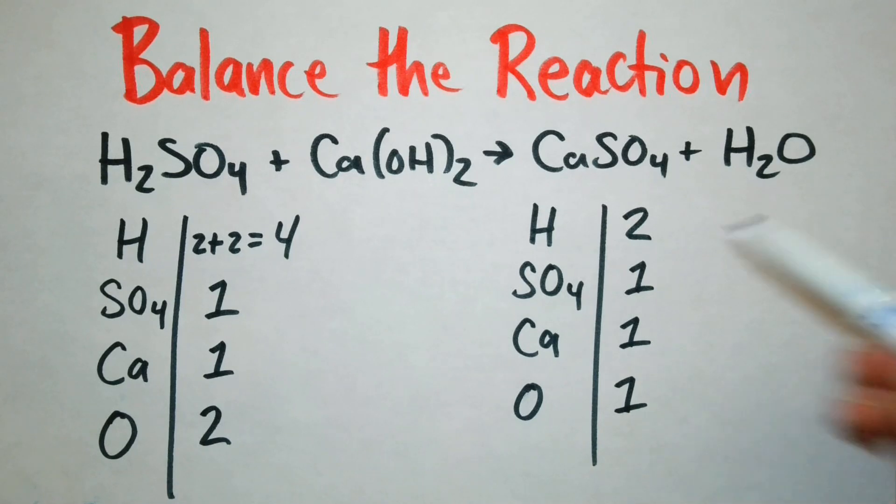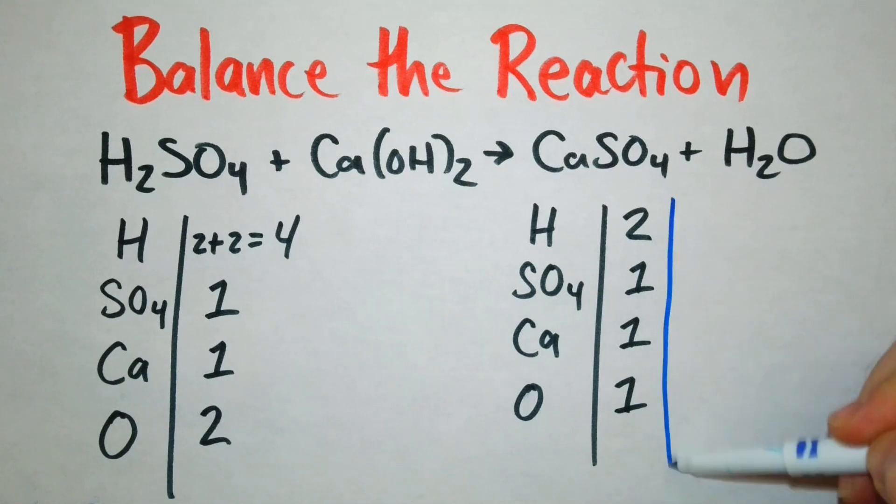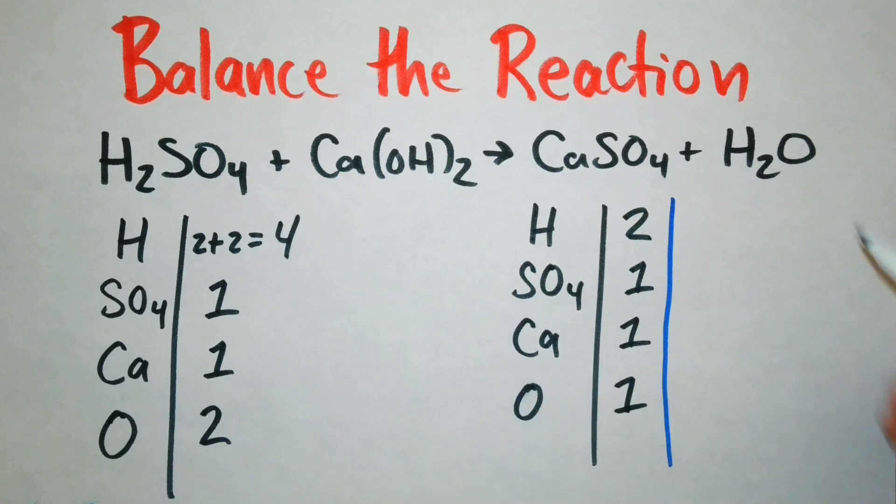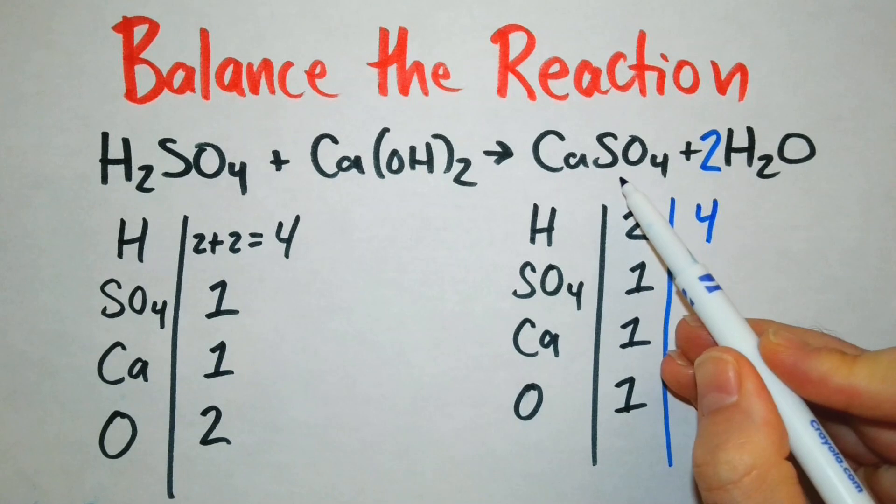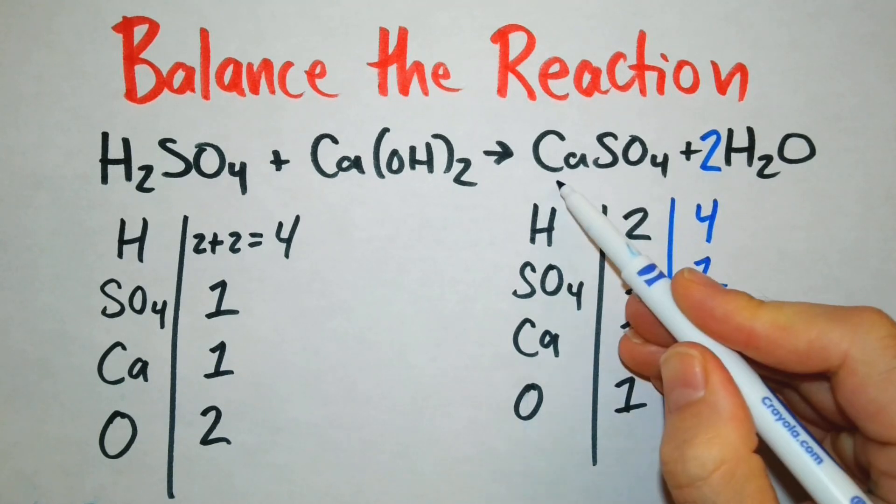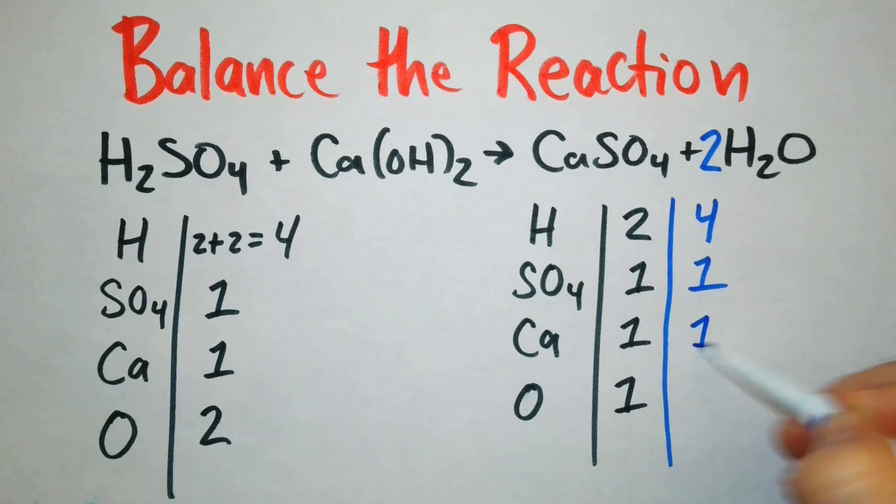I like starting with the hydrogens first and so I can ask myself what number can I multiply times two to get four? Well that's two. So two times our subscript of two will give us four. We still only have one sulfate. We still only have one calcium and oxygen is going to be affected by this coefficient of two. So two times one is going to give us two.